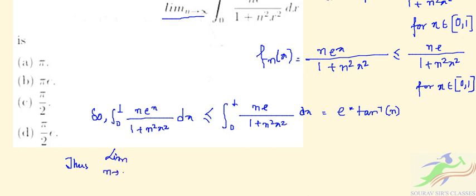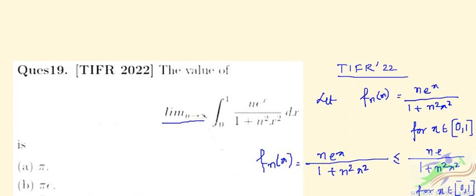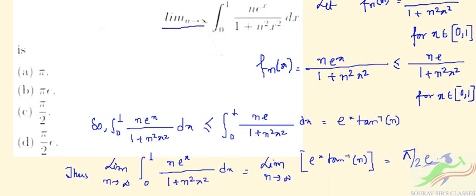Thus, when we apply the limit as n tends to infinity, the integral from 0 to 1 of n·eˣ divided by (1 + n²x²) dx equals the limit as n tends to infinity of e times arctan(n), which gives e times π/2. So the value is π/2 multiplied by e, and the correct option for question number 19 is option D.